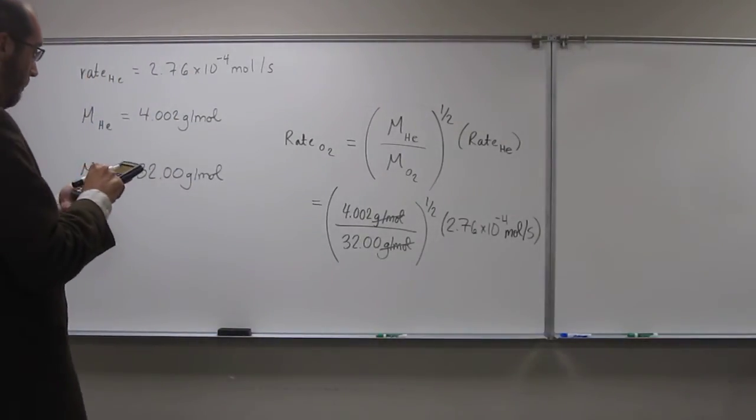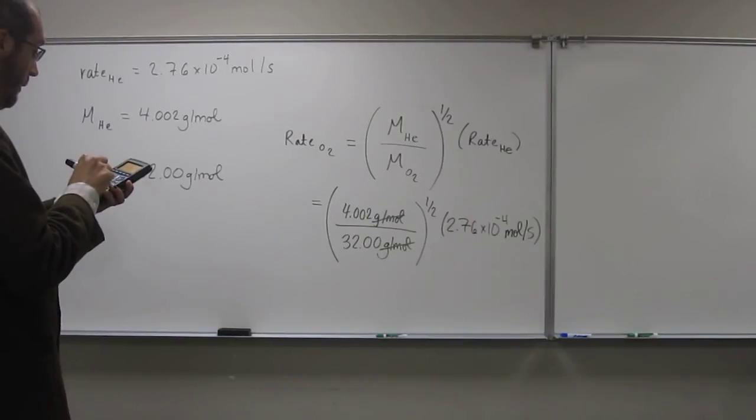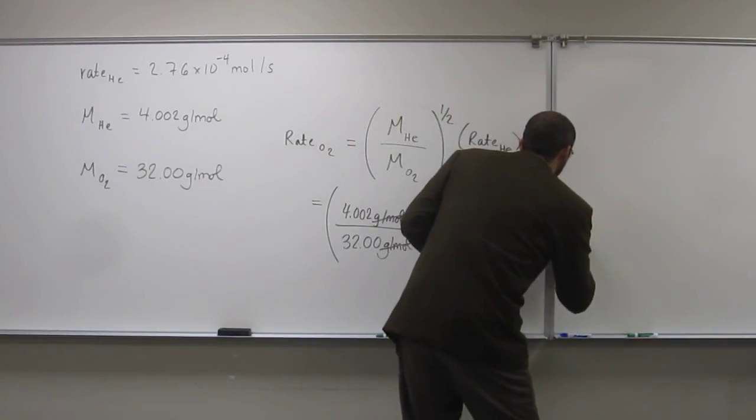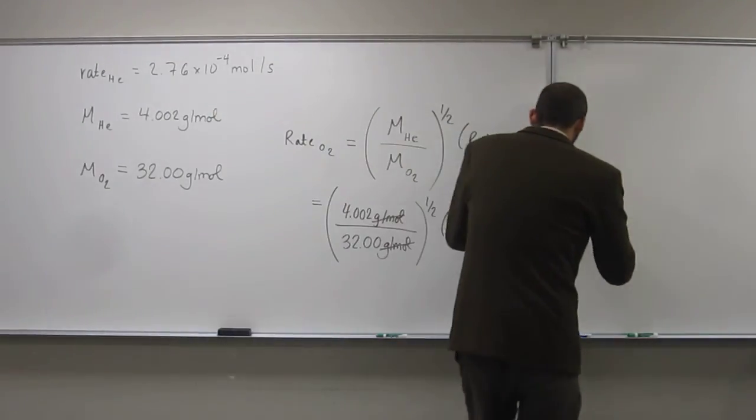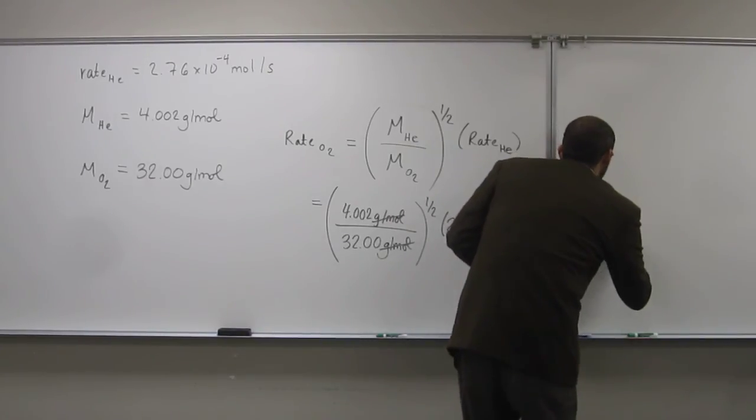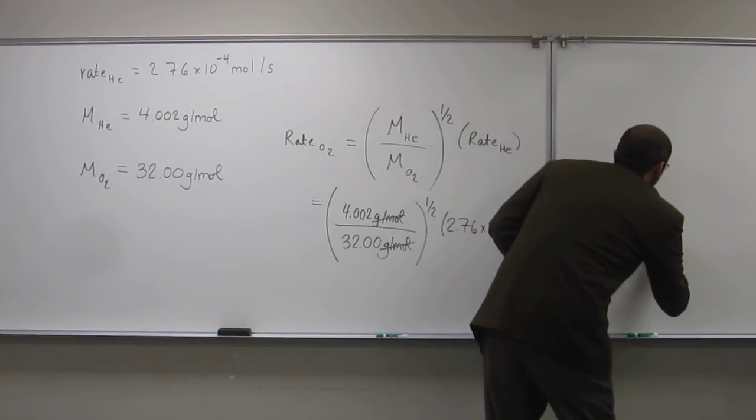So, let's do 4.002 divided by 32, 0.125, multiplied by 2.76. And I get a number. So, to three significant figures, 9.76 times 10 to the negative 5th moles per second.